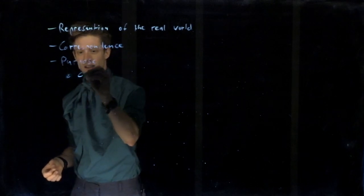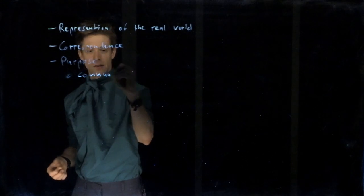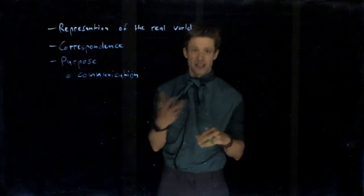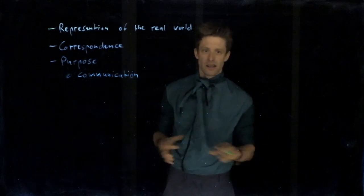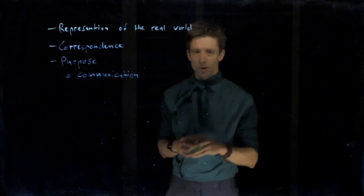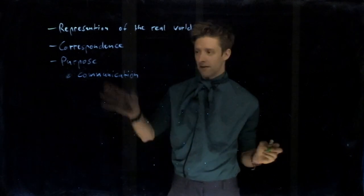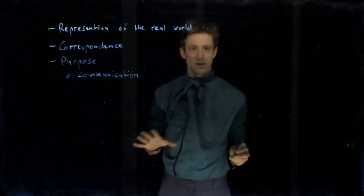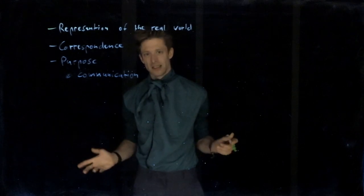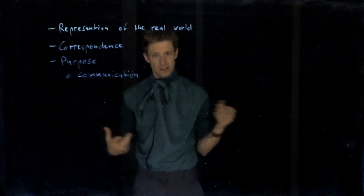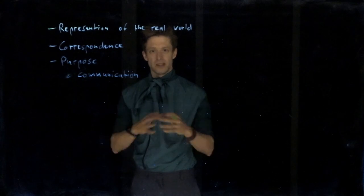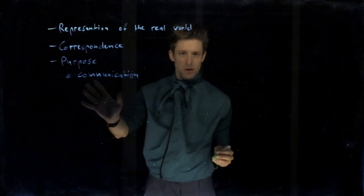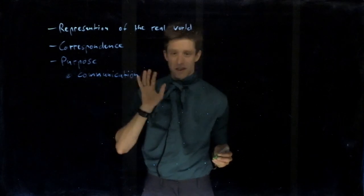There are a whole lot of things we could be doing with a model in software engineering. Very common is the communication aspect — maybe you are just drawing something so that you can discuss it in a team meeting: here's a suggestion how we can break down the system into components, what do you think? If you do a communication model, maybe a lot of details you can skip, and you don't need to worry much about notation as long as everyone understands it.